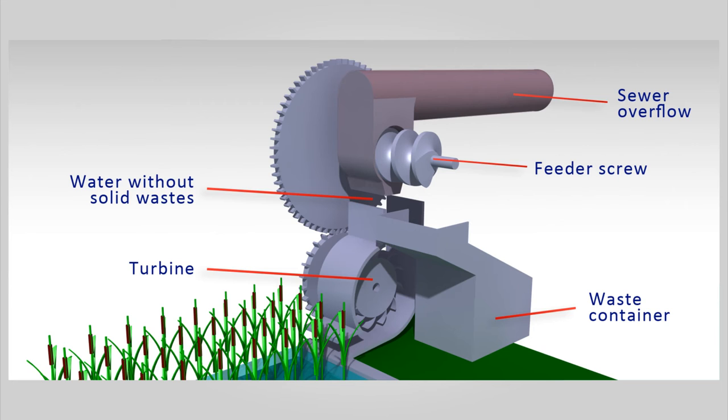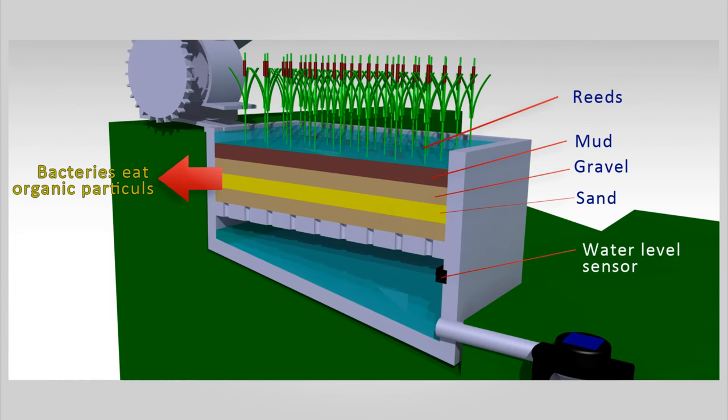Finally, the waste is stuck in the tank. The water comes into a pond with reeds. The reeds feed bacteria in the ground with oxygen and these bacteria eat organic particles under water.